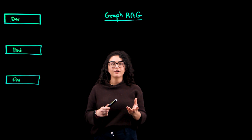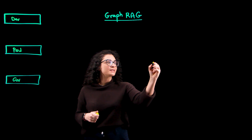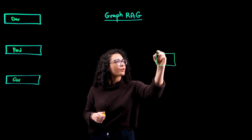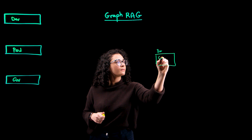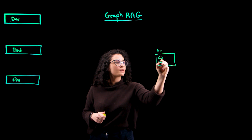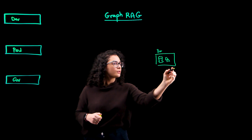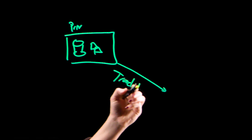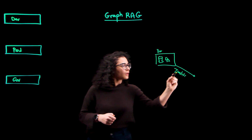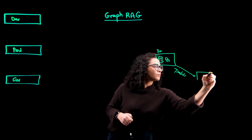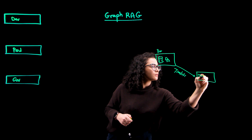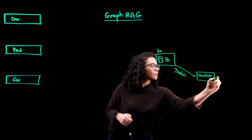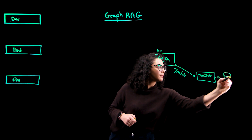To understand GraphRAG, let's first break down how baseline RAG works. We start off with a private data set — it can be both structured and unstructured. We break them down into text chunks and store those embeddings in a vector database.